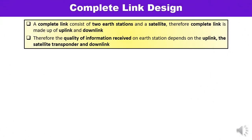In satellite communication, our requirement is power budget calculation. The power budget indicates how power is consumed when the signal is traveling up towards the satellite, or traveling down towards the earth station. A complete link consists of two earth stations and a satellite, and the quality of information received at the earth station depends upon the uplink, downlink, and the satellite transponder. The function of the satellite transponder is to amplify the signal strength and perform frequency conversion.